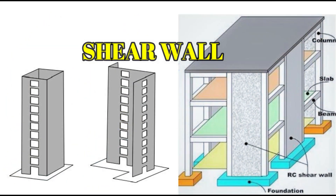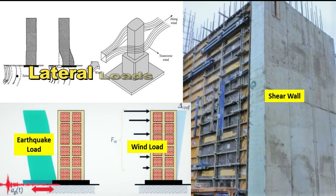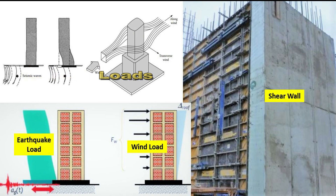Shear wall is a vertical wall structure that may serve both architectural purposes as a partition and structural purposes to carry vertical and horizontal loading. Shear walls are mainly used in high-rise buildings which are subjected to lateral loads. Lateral loads are horizontal loads acting parallel to the building, and the most common types are wind load and earthquake load.